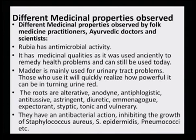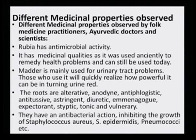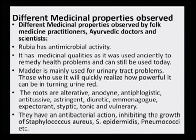Rubia has antimicrobial activity and was used anciently to remediate health problems. Madder is mainly used for urinary tract problems — those who use it will realize how powerful it can be in turning urine red. The roots are alternative, anodyne, antiphlogistic, antitussive, astringent, diuretic, expectorant, styptic, tonic and vulnerary. They have an antibacterial action inhibiting groups of bacteria such as Staphylococcus and various species as well as Pneumococcus.